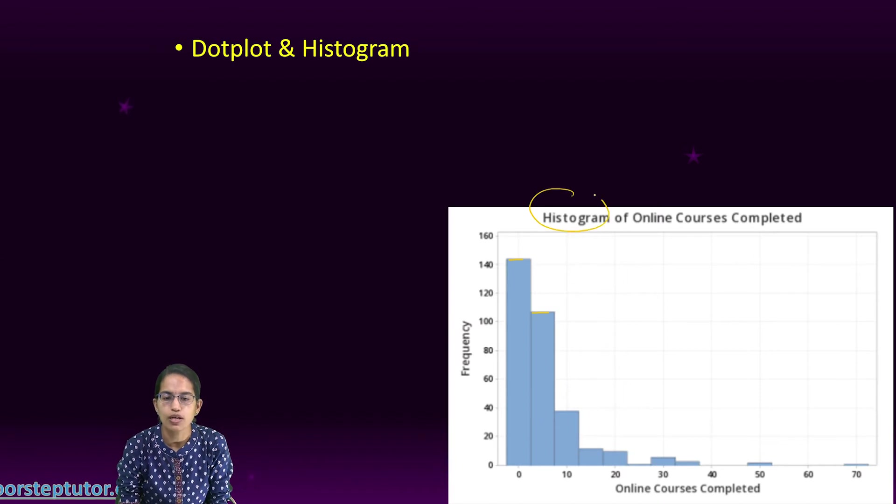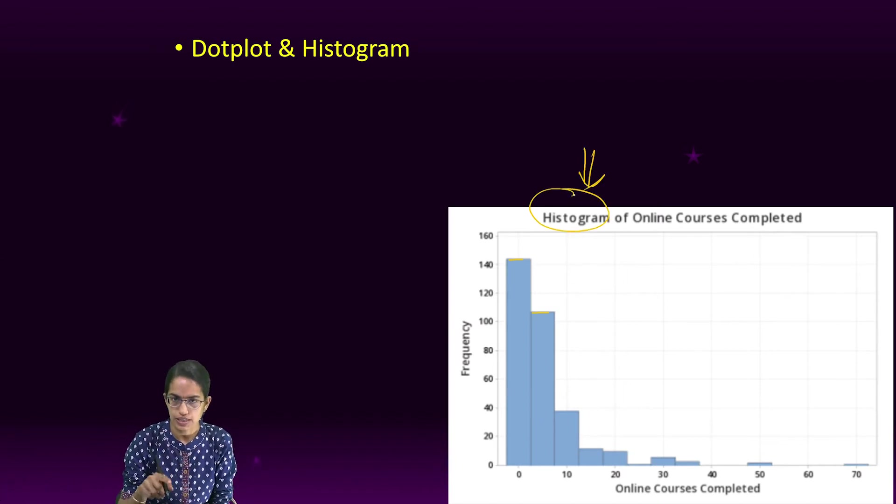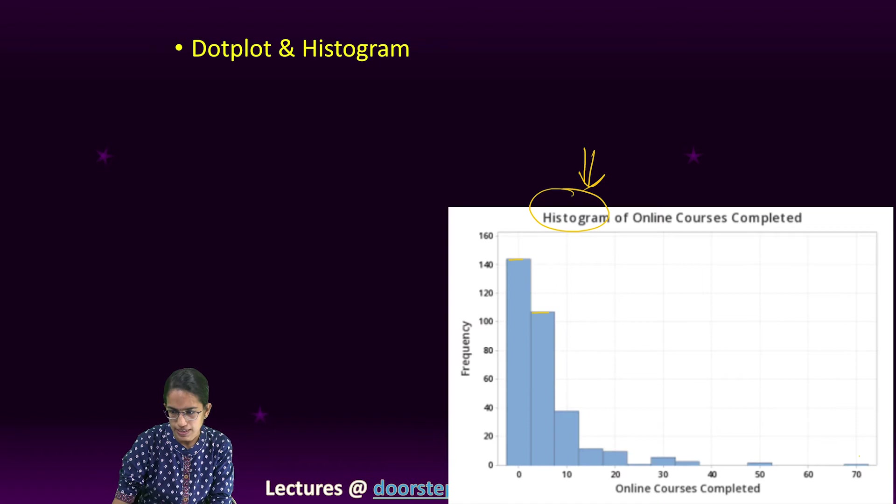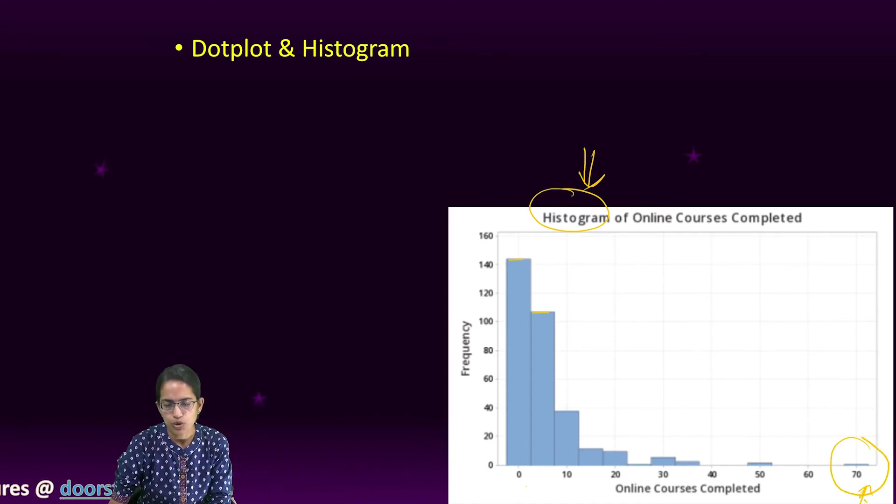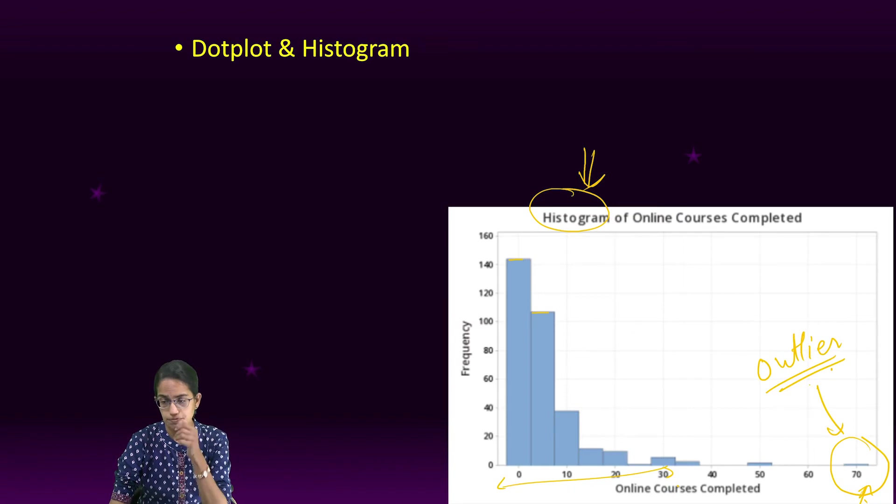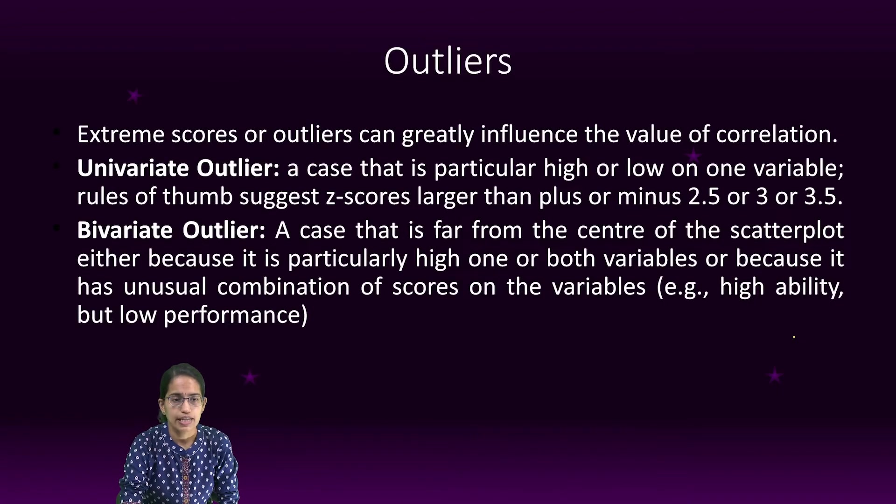We are trying to understand the number of courses that are completed and how many people actually completed it. We call this a histogram. In this section, we have understood how we graphically represent one quantitative variable. Again in this diagram, as you can see, 70 is an outlier, while most of the values are from 0 to 30.